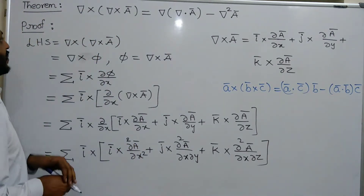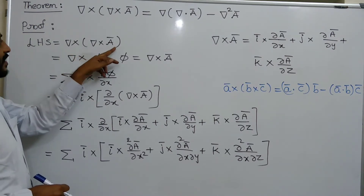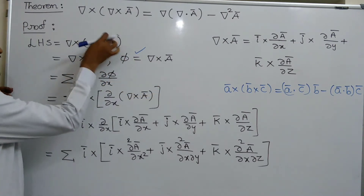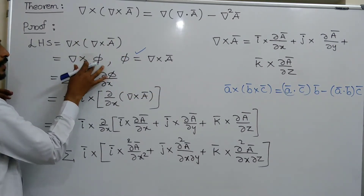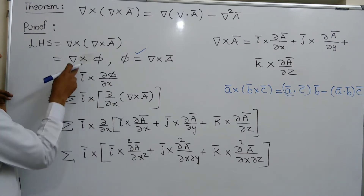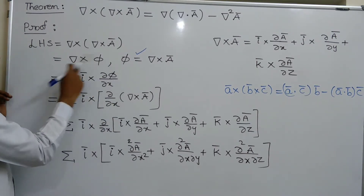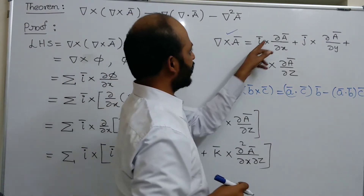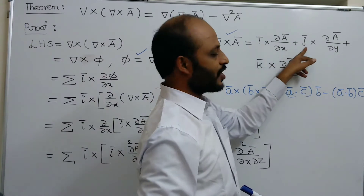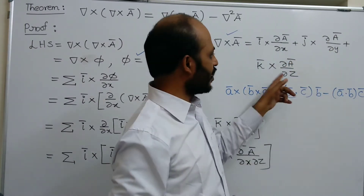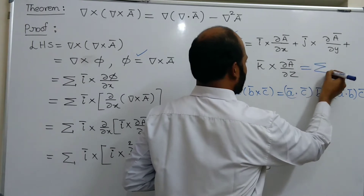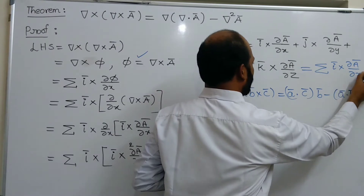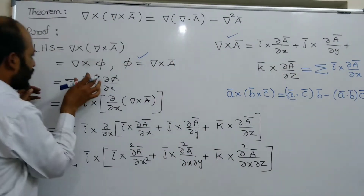For the first theorem, let us take the LHS as del cross of del cross A-bar. Let us take phi equals del cross A-bar. Then this LHS takes the form del cross phi. The definition of del cross A-bar is: I-bar cross dou A-bar by dou x plus J-bar cross dou A-bar by dou y plus K-bar cross dou A-bar by dou z, which is summation i-bar cross dou A-bar by dou x. By applying this definition to del cross phi, we get summation i-bar cross dou phi by dou x.